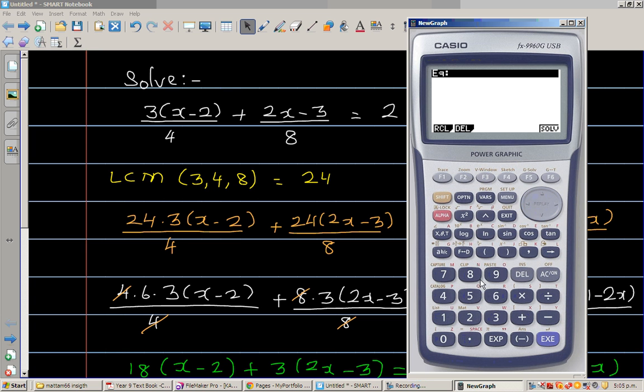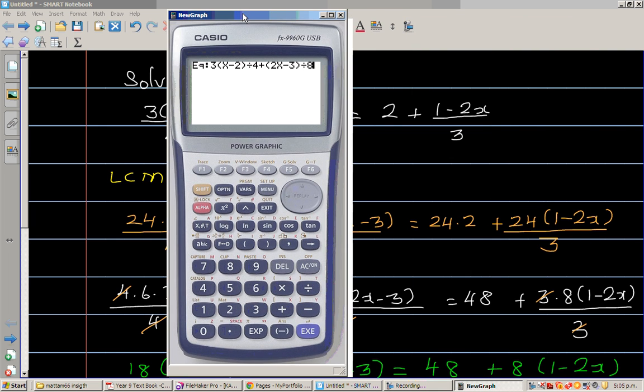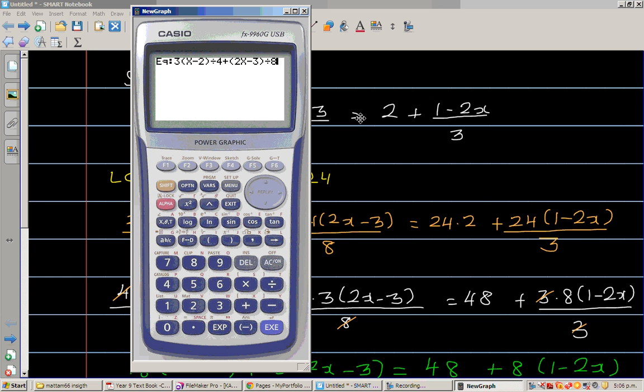And then you simply type in this. So I go 3 bracket x minus 2 divided by 4. Then you've got plus. Let's put this in the bracket. Plus 2x minus 3 divided by 8. Then you've got an equal to sign. So you go shift. Your equal to sign is here. So you press shift equal.